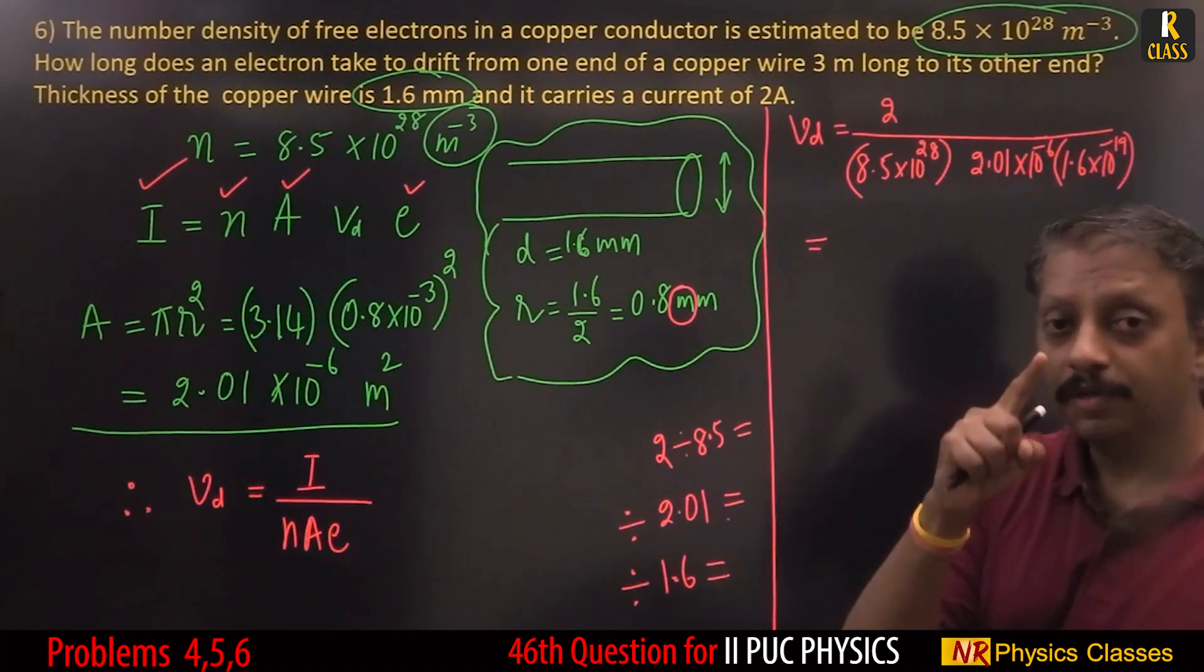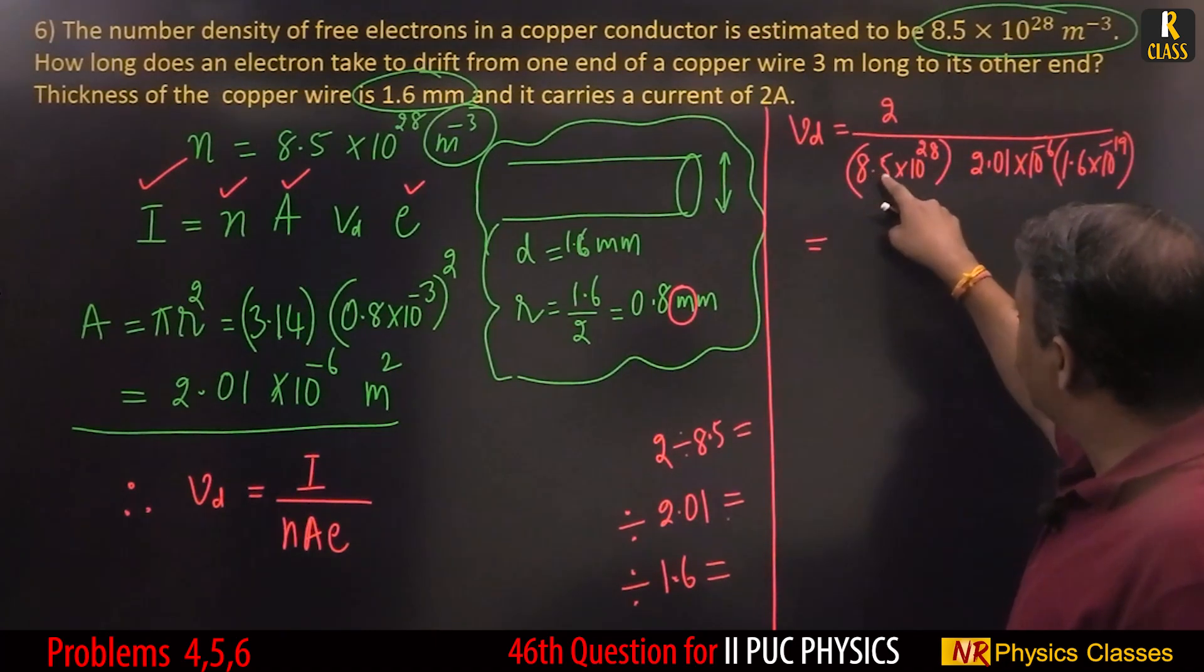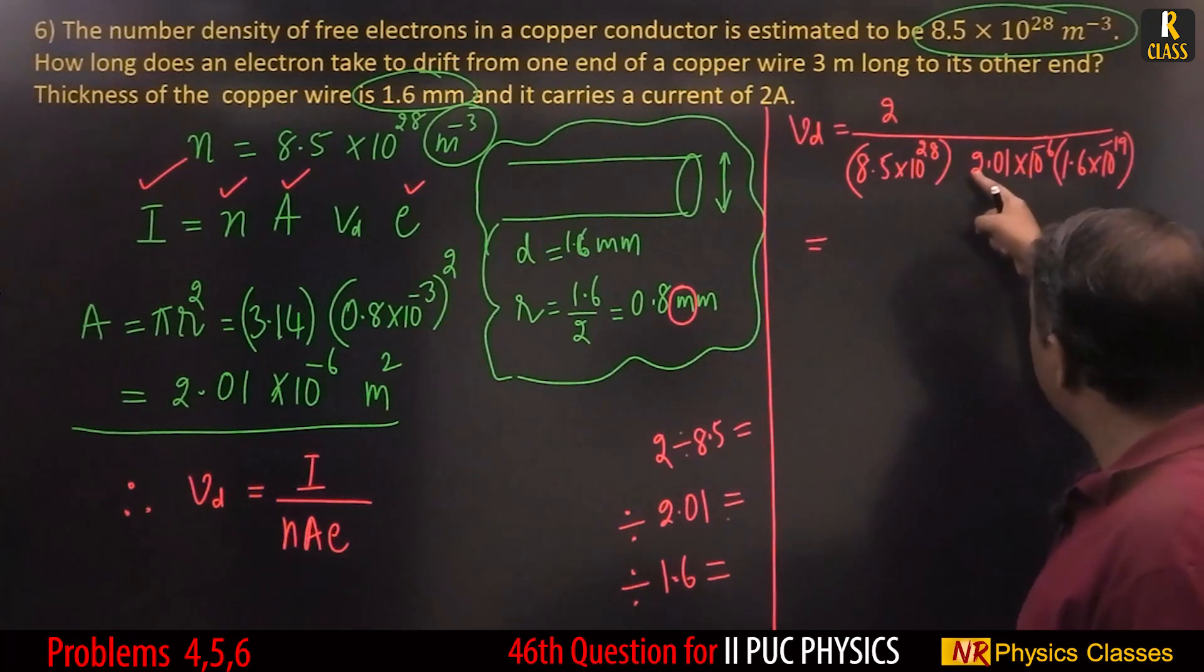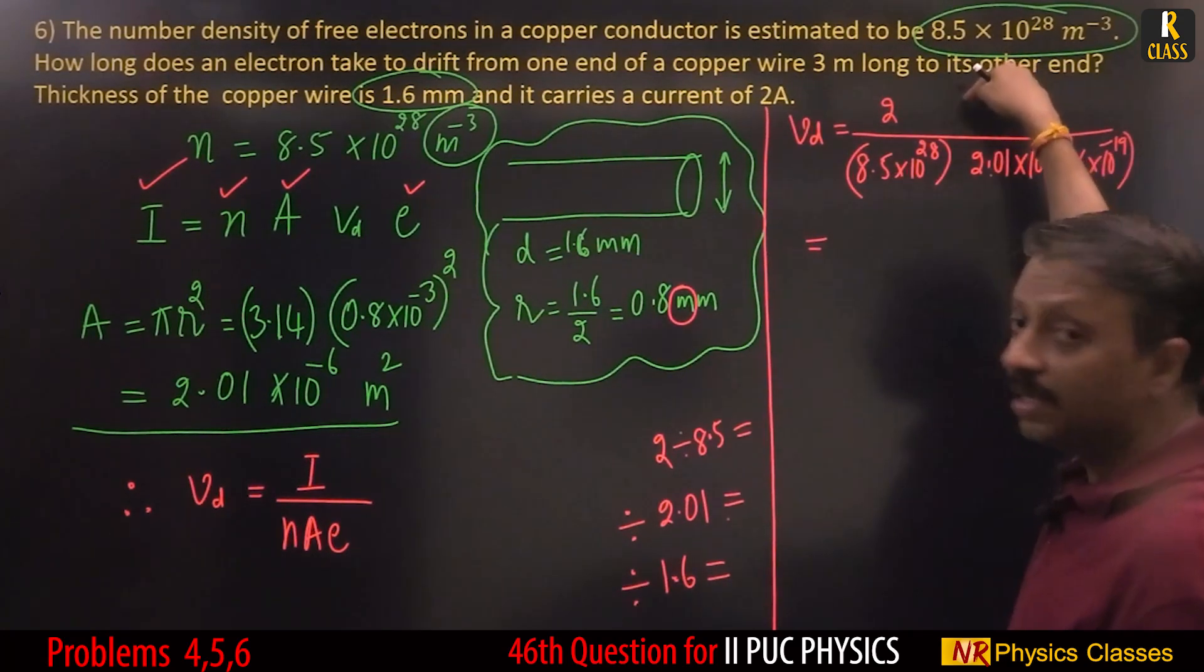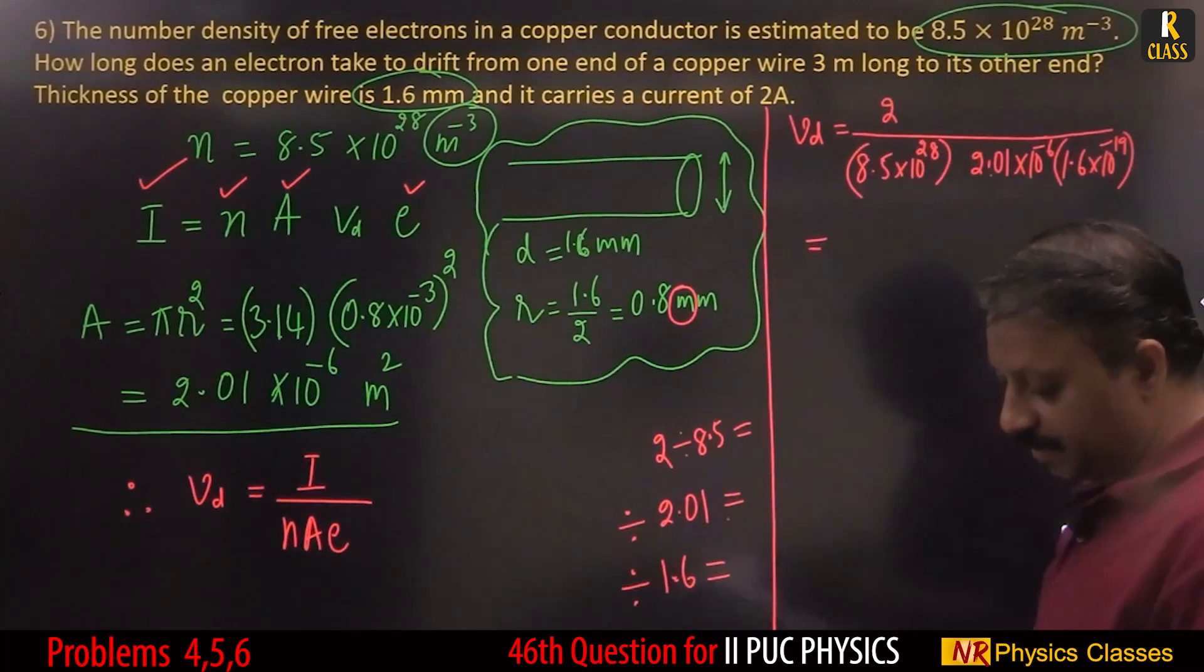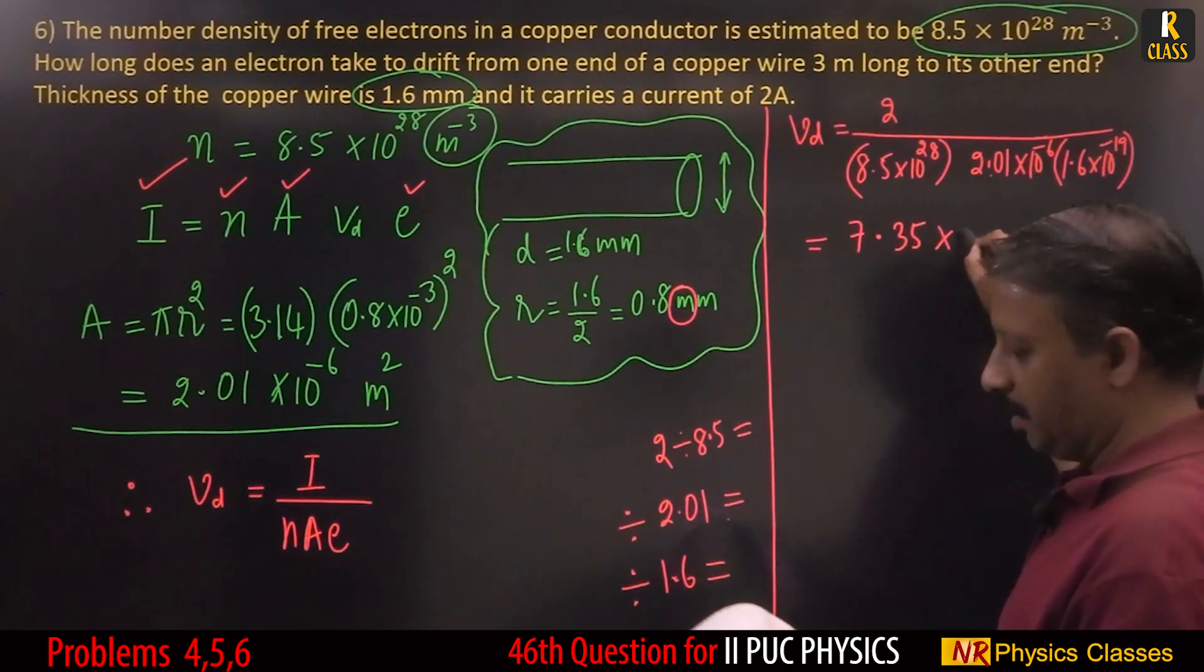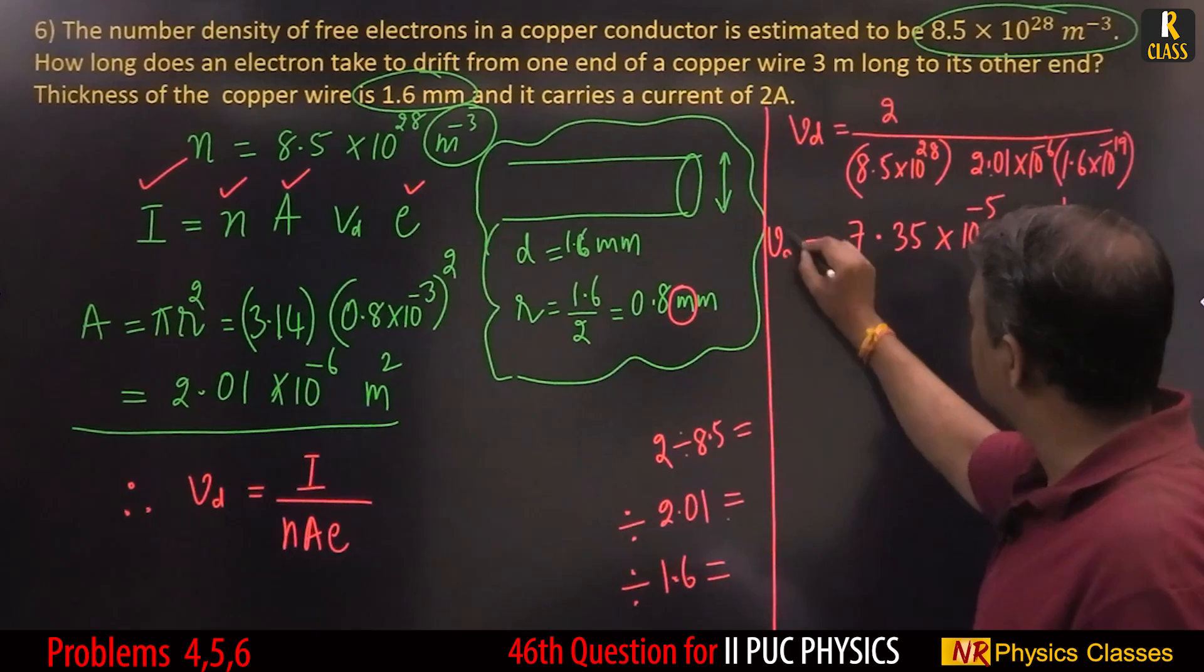Most students will do this mistake - they will do 2 divided by 8.5 into, and calculator will take 2.01 in the numerator. So better practice. When you simplify this, it turns out to be 7.35 times 10 to the minus 5 meter per second. This is drift velocity.